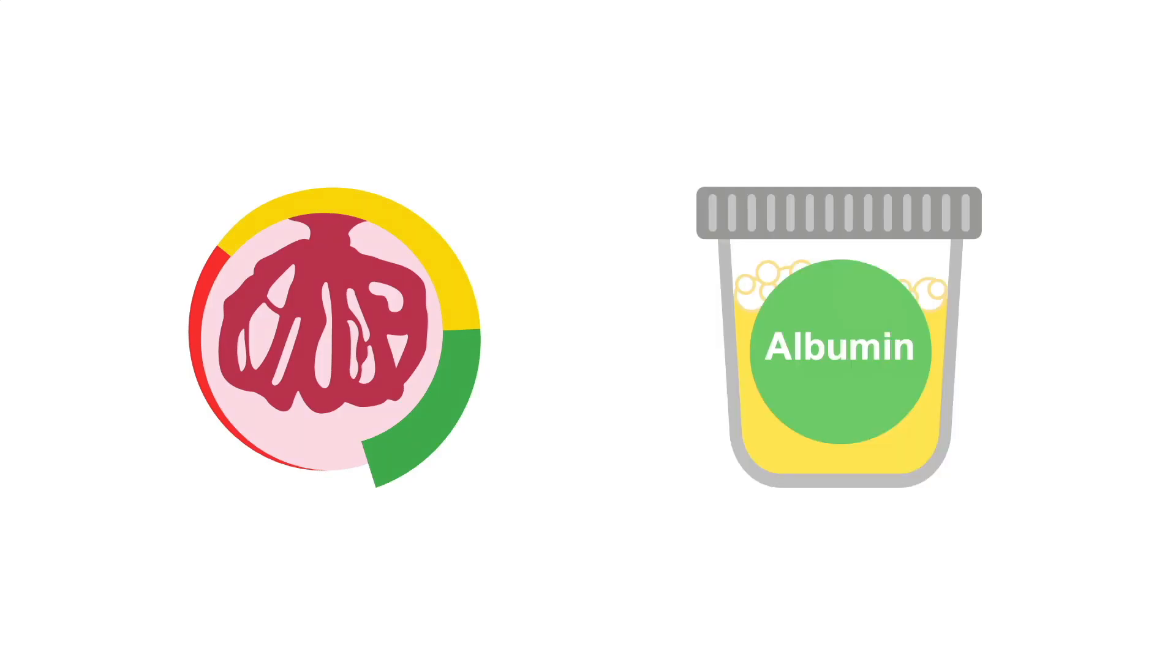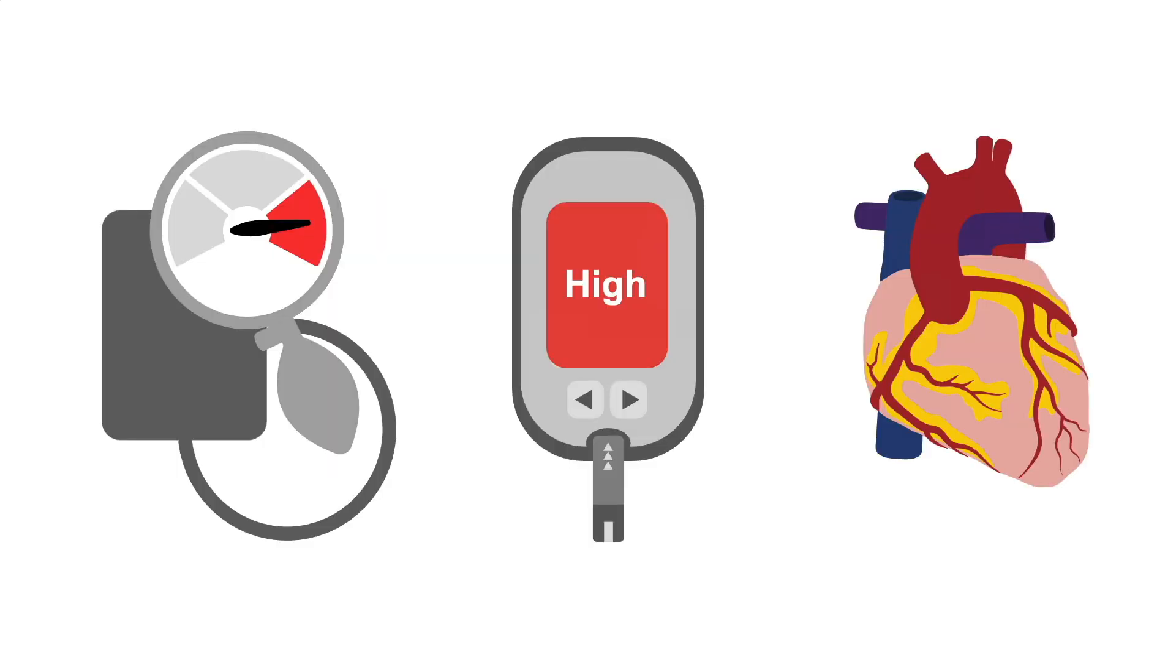Staging chronic kidney disease is based on GFR, albuminuria, and the cause of the patient's CKD.